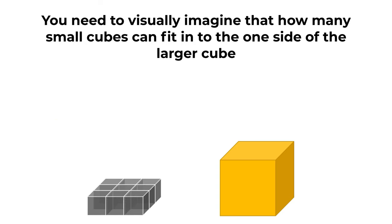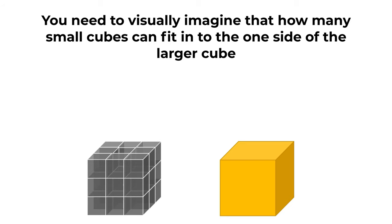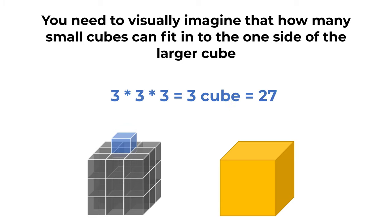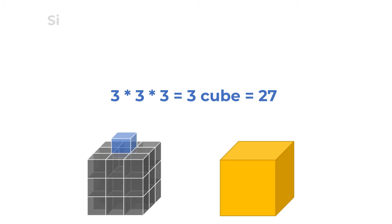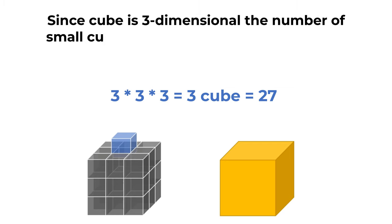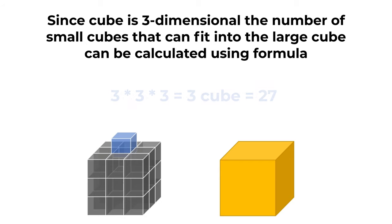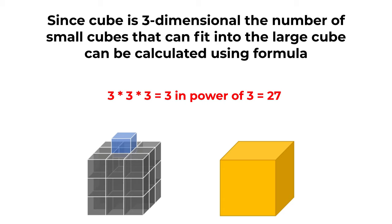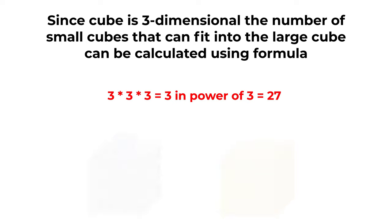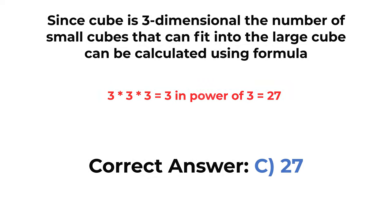Since the cube is three-dimensional, the number of small cubes that can fit into the large cube is calculated using the formula 3 multiplied by 3 multiplied by 3, which equals 3 cubed, equaling 27.